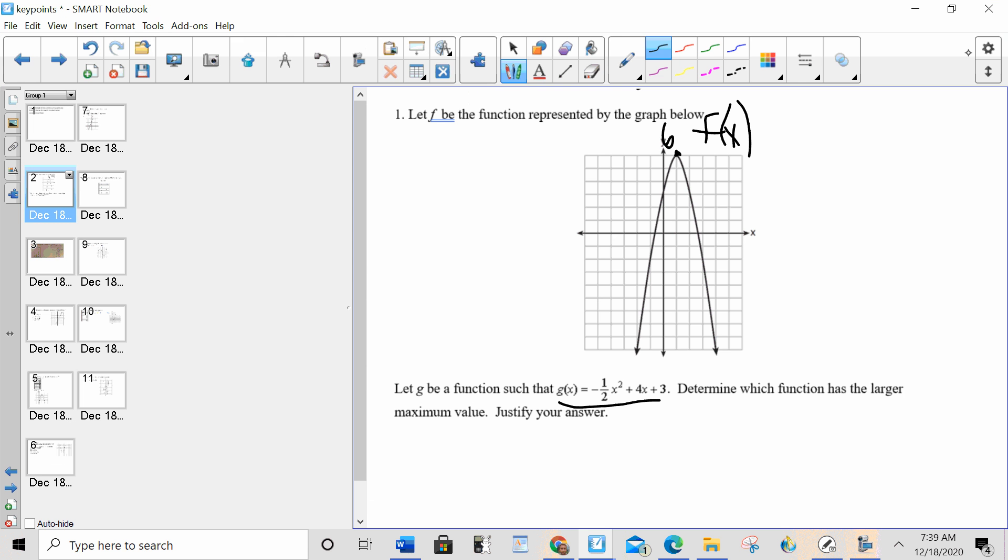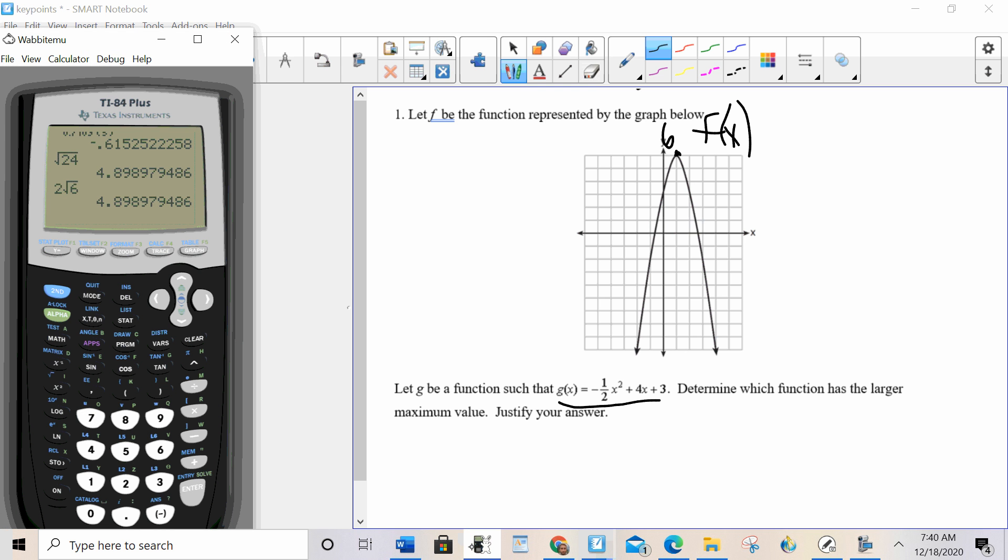So now for the bottom one, to find the maximum, I'm going to go to my calculator, I'm going to type it in, and I'm going to look at the graph just like I did for f. So I've got negative, y equals enter, one half x squared plus four x plus three. Zoom six. Now I need to see a little bit more. So I want to see more of the top. So I'm going to go to window and make my y max 20, graph.